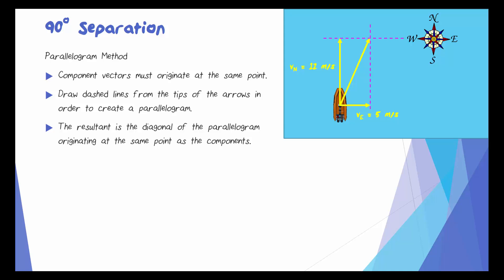Since the two component velocities are perpendicular to one another, we end up with a couple of right triangles. This means that we can use the Pythagorean theorem to determine the magnitude of the resultant. So we do a squared plus b squared equals c squared and plug in our 12 meters per second and our 5 meters per second. And we'll find that the resultant velocity is 13 meters per second.